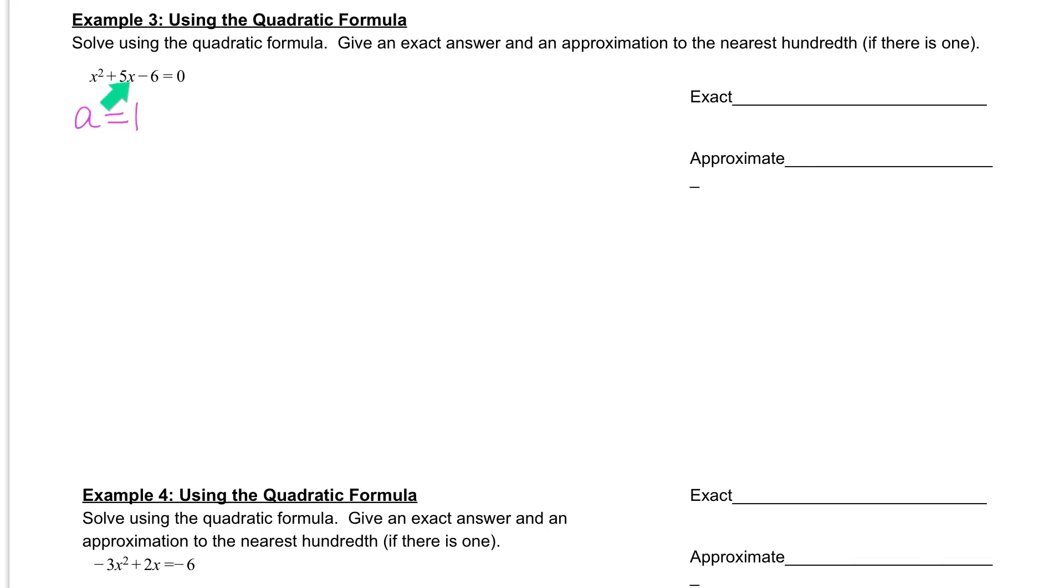b is the number in front of our x, so b is 5. c is the number that is our constant, which is negative 6.